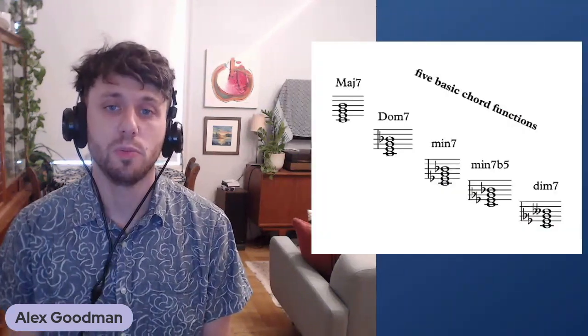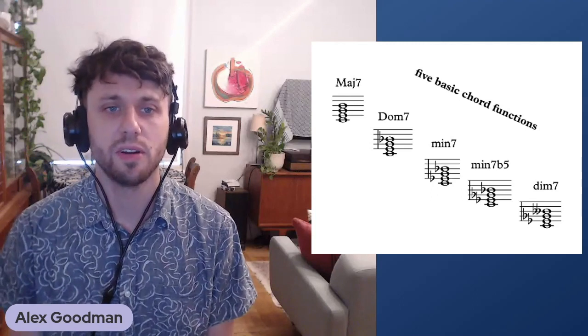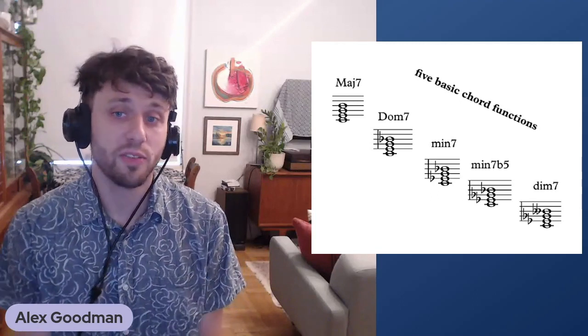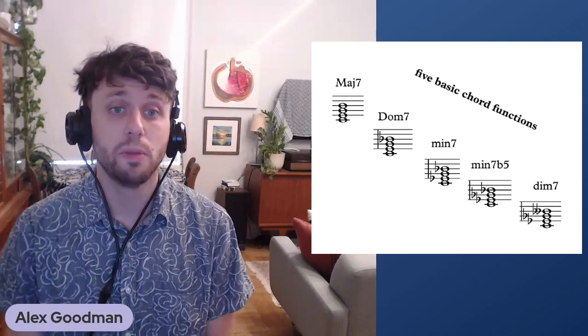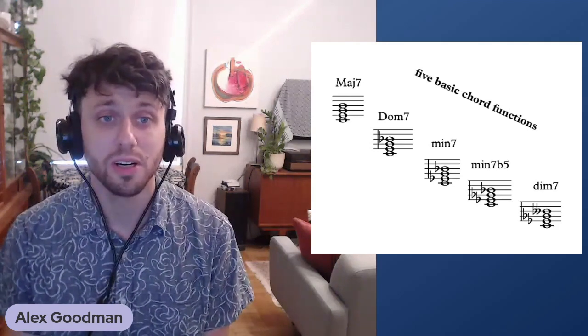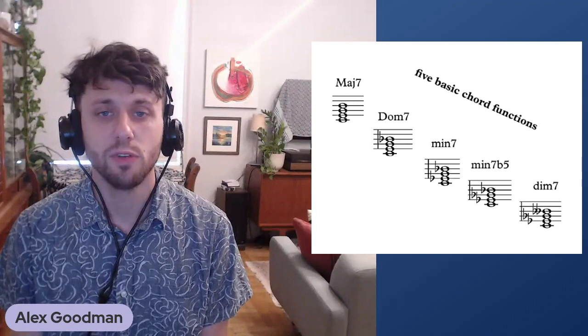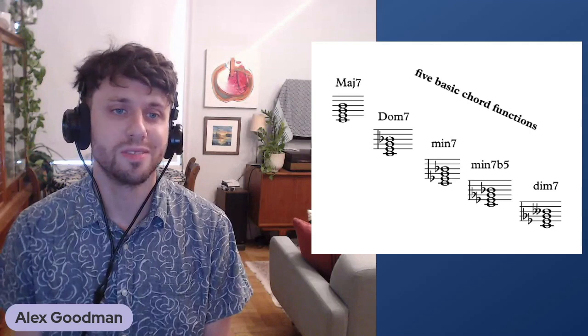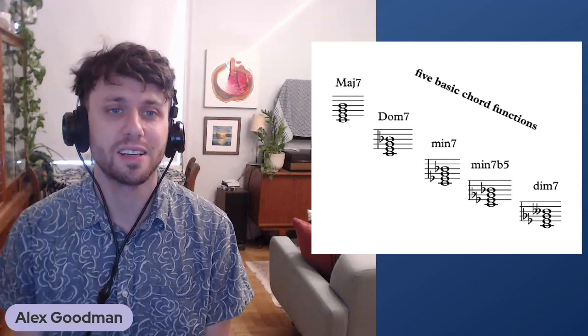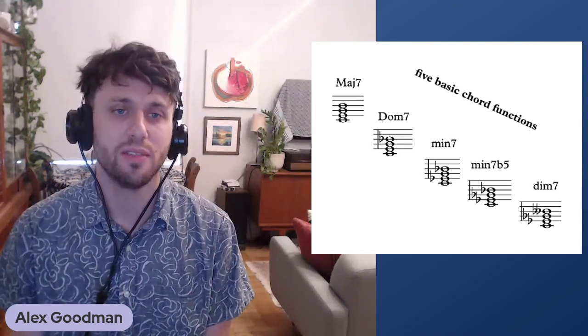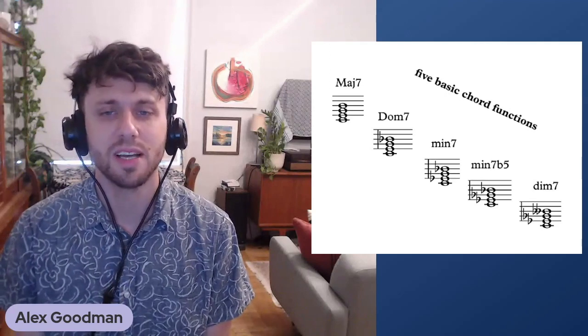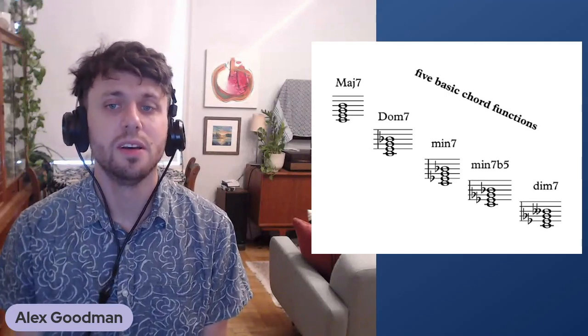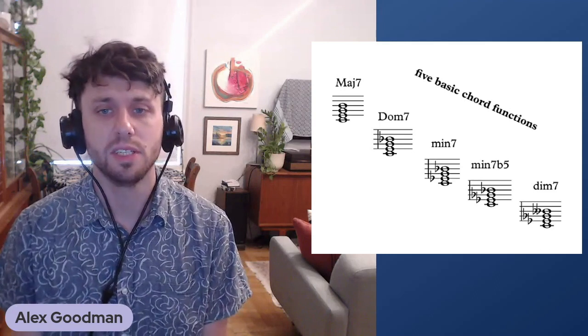So when we think about jazz harmony, I think most of the time we see five chords, and those would be major seven, dominant seven, minor seven, minor seven flat five, and diminished seven. These make up the bulk of the Great American Songbook jazz harmony. If you follow the line through them from major seven, you're just changing one note by a semitone to get to that next chord quality.